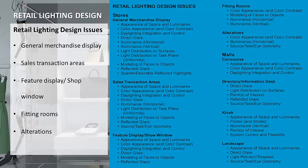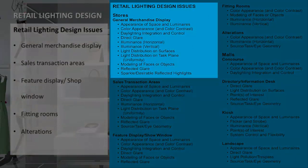The retail lighting design issues for General Merchandise Displays are: Appearance of Space and Luminaires, Color Appearance and Color Contrast, Daylighting Integration and Control, Direct Glare, Illuminance Horizontal, Illuminance Vertical, Light Distribution on Surfaces, Light Distribution on Task Plane for uniformity, modeling of faces or objects, reflected glare, and sparkle or desirable reflected highlights.